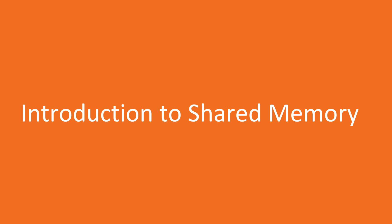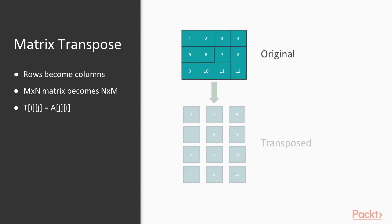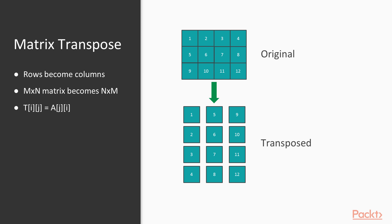Transposing a matrix. A matrix is essentially a two-dimensional array. When we transpose it, basically the rows of the input become columns of the output. Or, to state it mathematically, dest[i][j] equals source[j][i] for all i and j within the matrix. Transposing a non-square matrix also changes its shape — for example, the transpose of a 10 by 20 matrix is a 20 by 10 matrix. In this example, I'm only going to handle square matrices, just to keep the code a little simpler and focus on the important CUDA concepts.